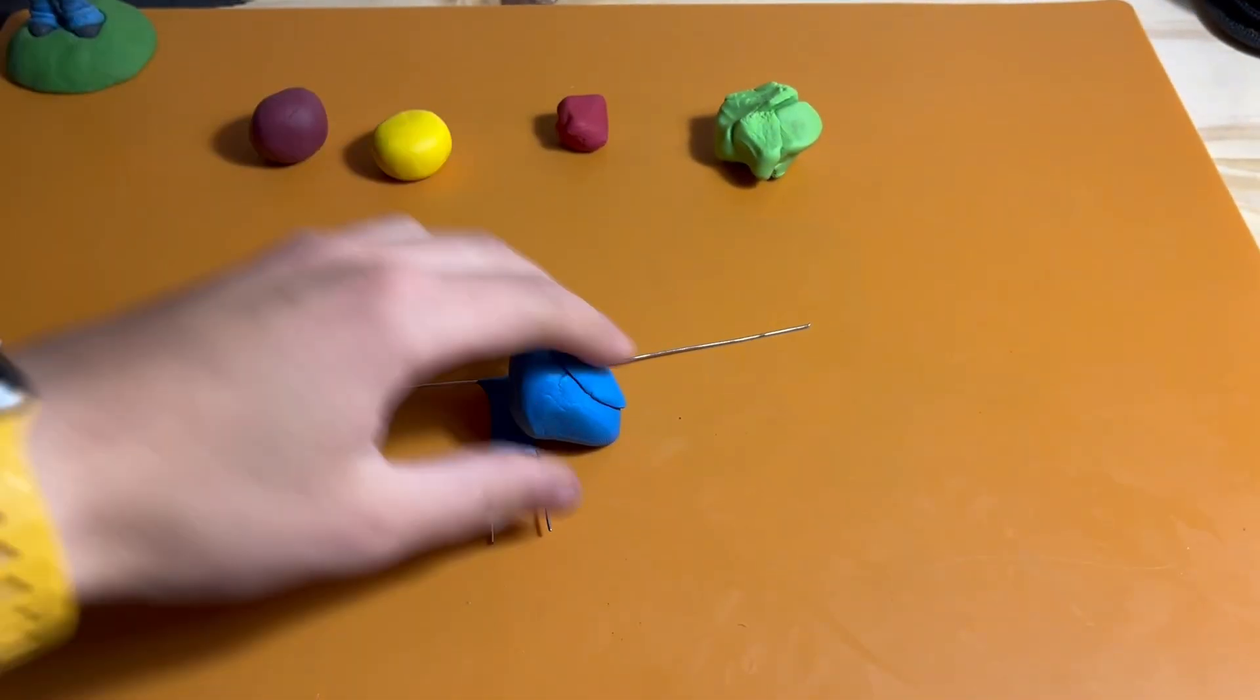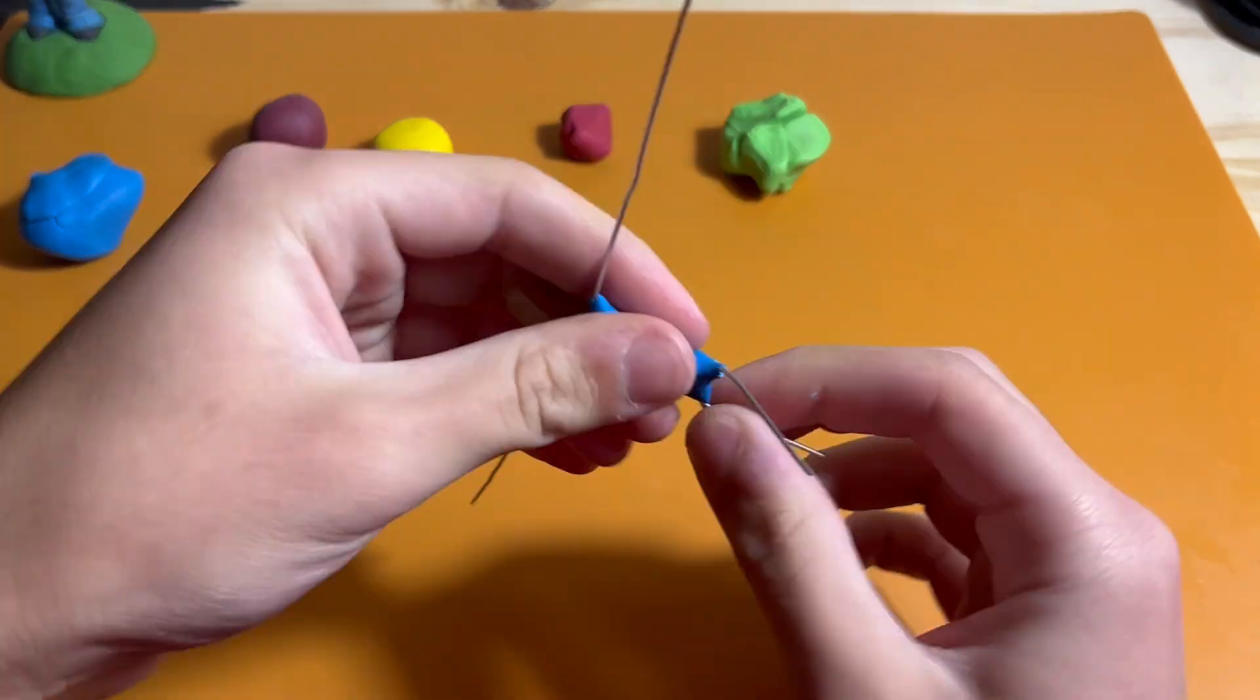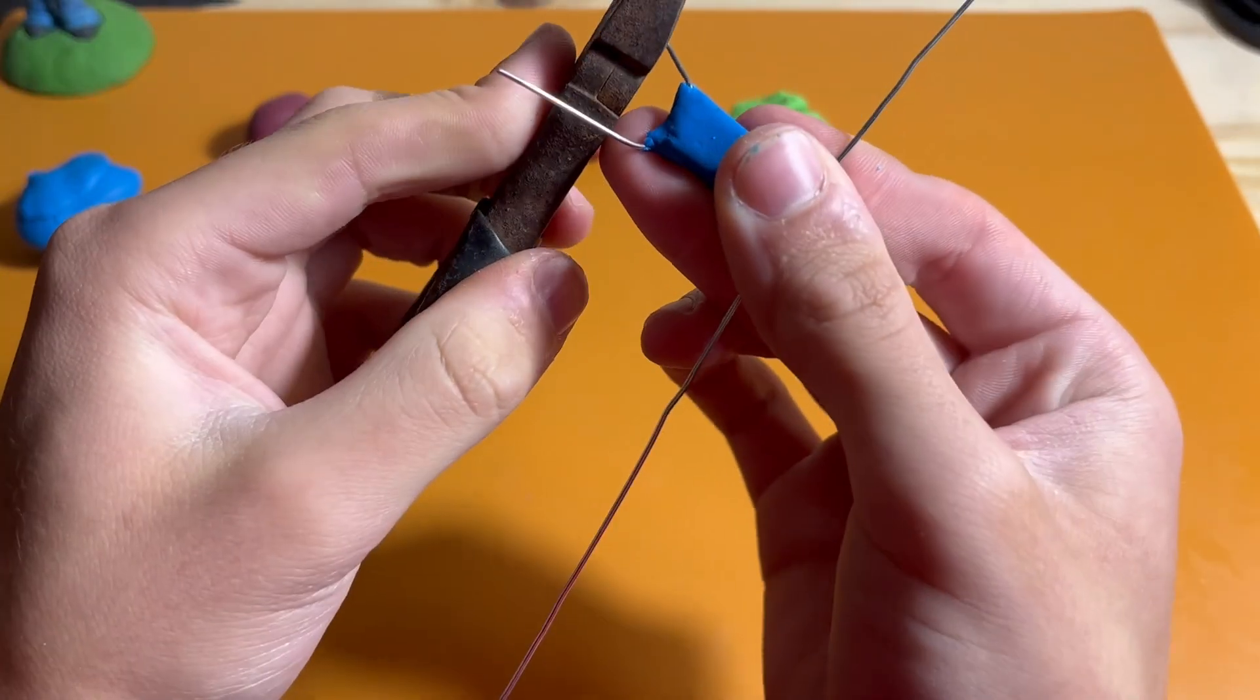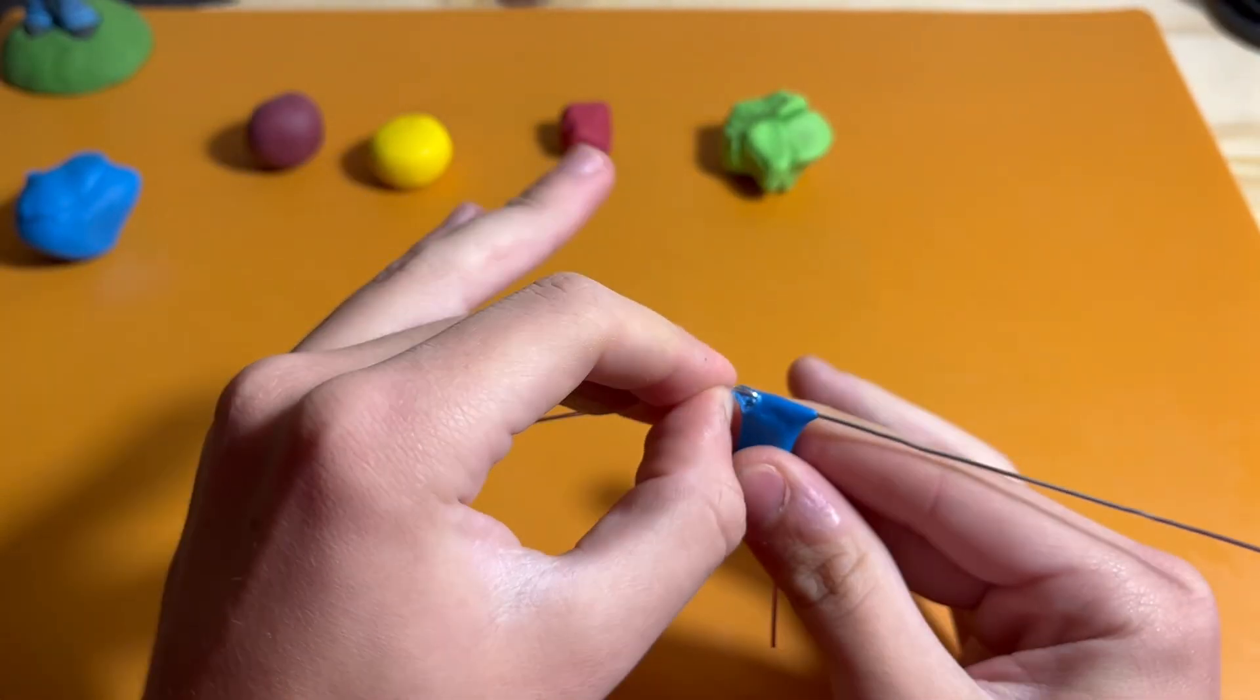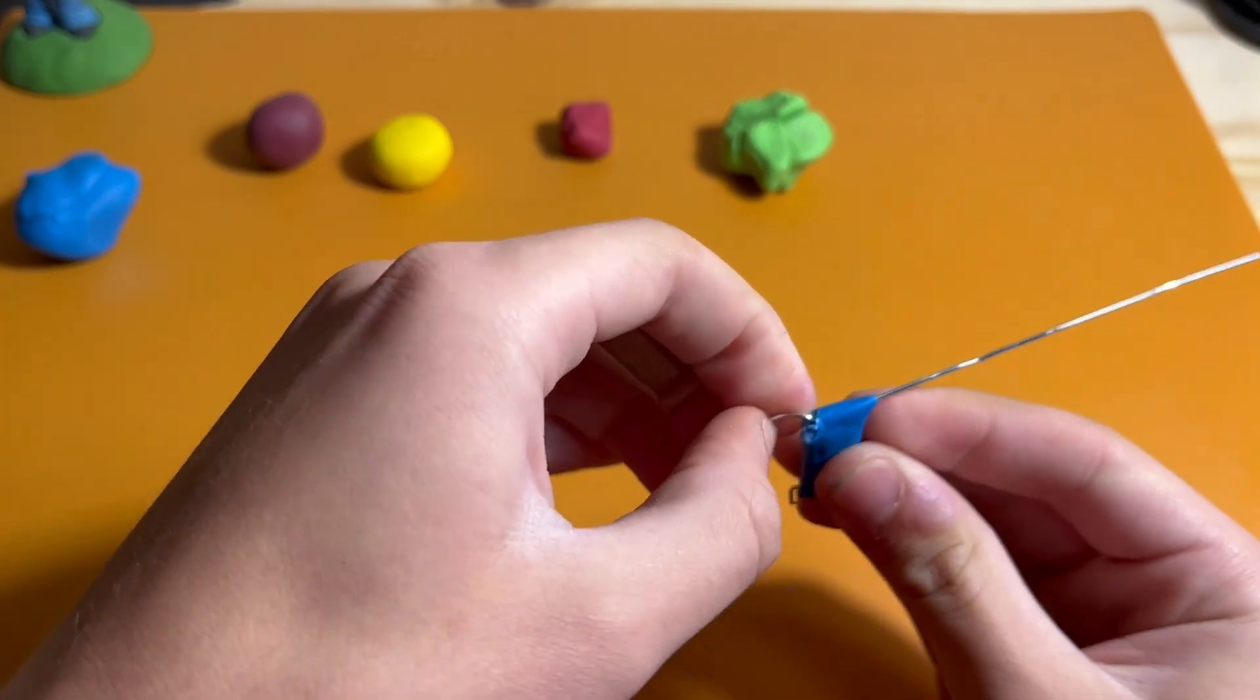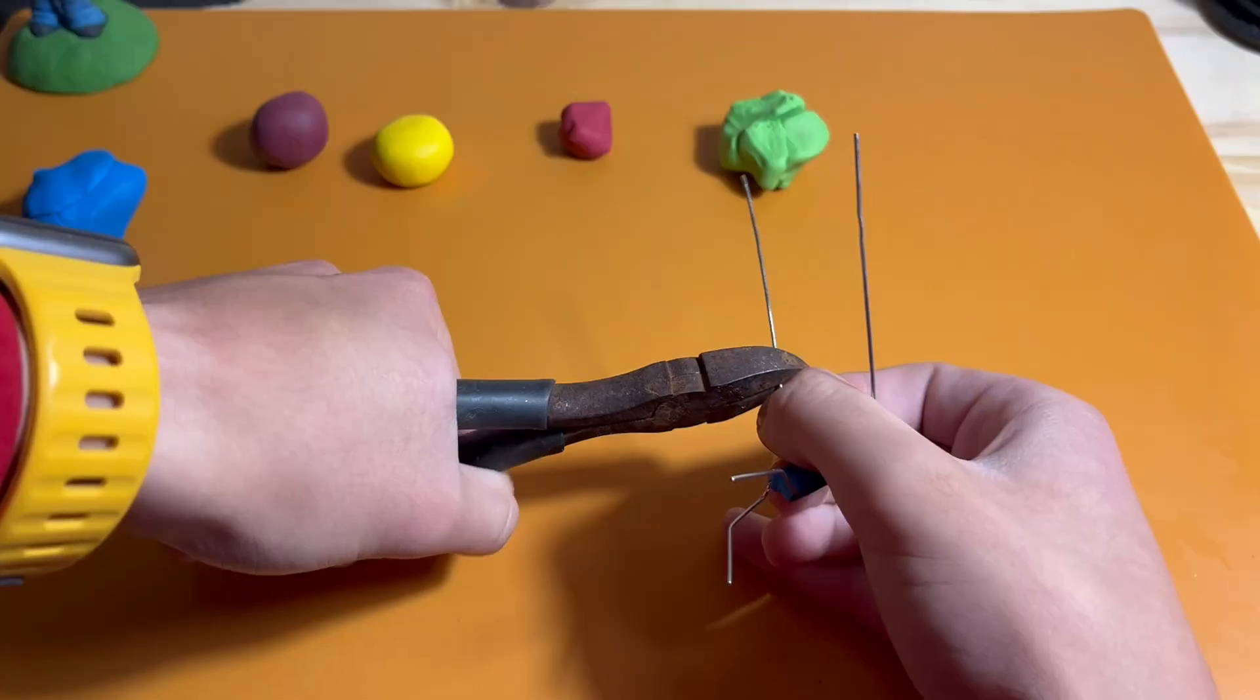And then I covered that in a base layer of blue clay, which most of the body will have, and then I posed the limbs in all of the various ways that they need to go. Once I had the legs posed, I could somewhat pose the arms, but in a mostly final position, as well as cut them to the proper size.